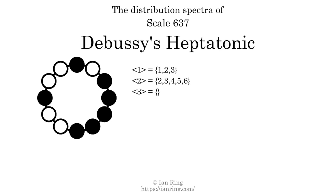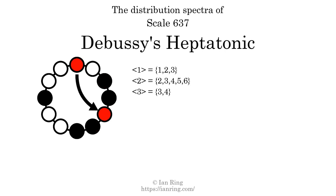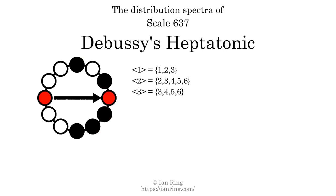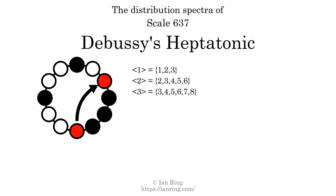The generic interval of three scale steps comes in 6 different specific interval sizes: 3, 4, 5, 6, 7, and 8 semitones. The spectrum width of this generic interval is 5.